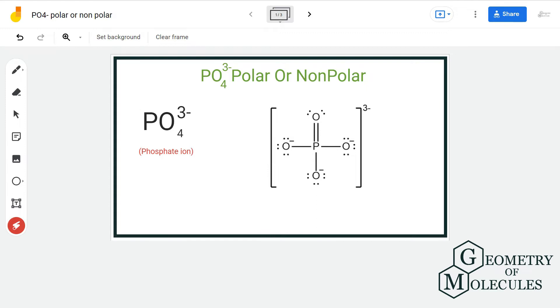So PO₄³⁻ ion is also known as phosphate ion, and to determine its polarity we are first going to look at its Lewis structure followed by its 3D structure.